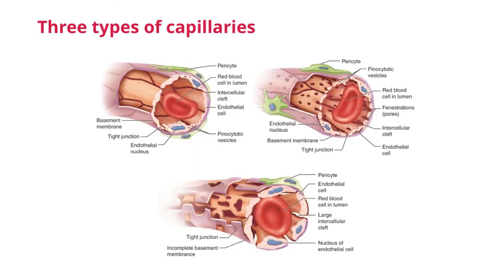There are three different types of capillaries: continuous, fenestrated, and sinusoidal. Let's take a closer look at the differences between these three types and where they are found in the body.